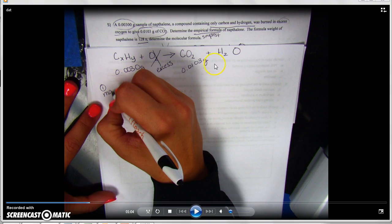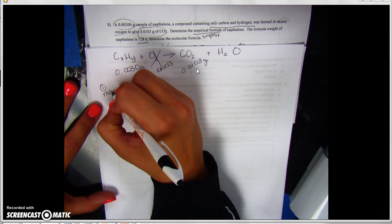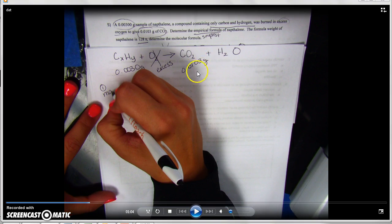Since everything is given to me in grams, we have to figure out how much carbon we have in grams and how much hydrogen we have in grams. We're not going to really worry about the oxygen because it is in excess. So what we're going to do is we're going to focus in on the fact that carbon dioxide, we know we have 0.0103 grams, and we can figure out how much carbon is in that.